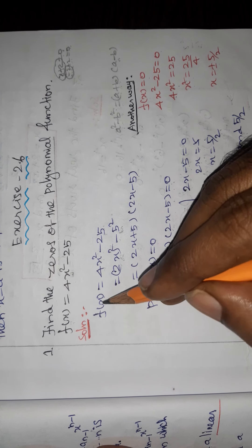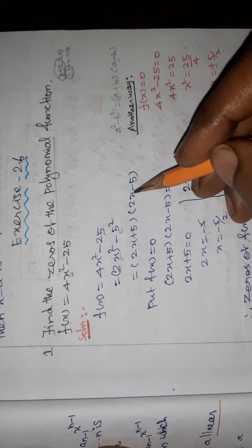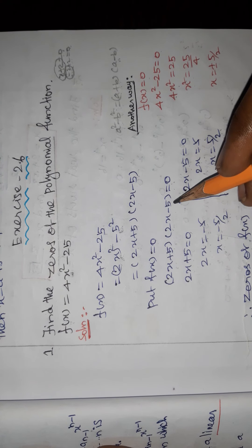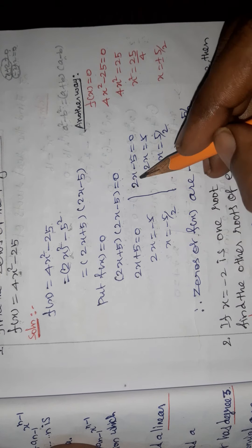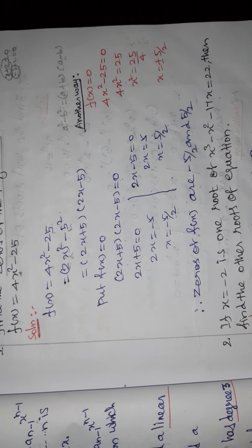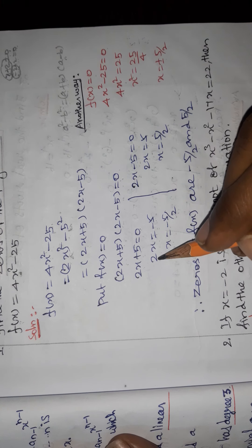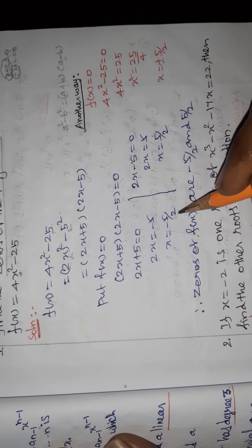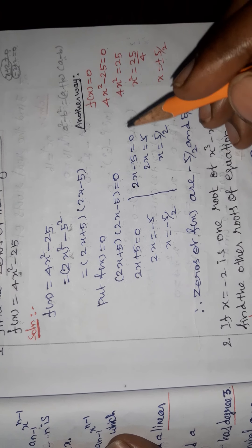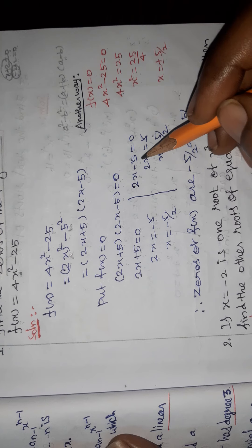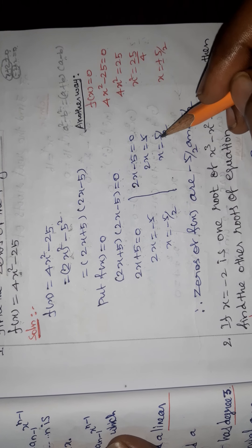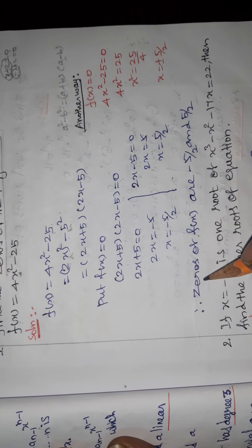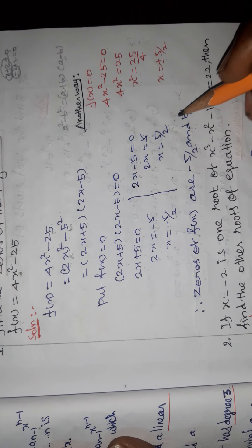Put f(x) = 0. So (2x + 5)(2x - 5) = 0. From 2x + 5 = 0, we get 2x = -5, so x = -5/2. From 2x - 5 = 0, we get 2x = 5, so x = 5/2. Therefore, the zeros of f(x) are -5/2 and +5/2.